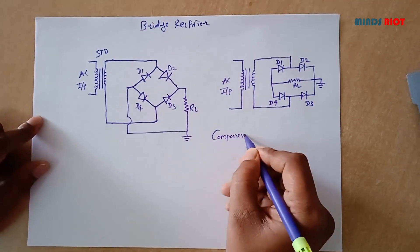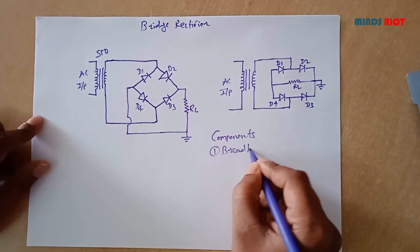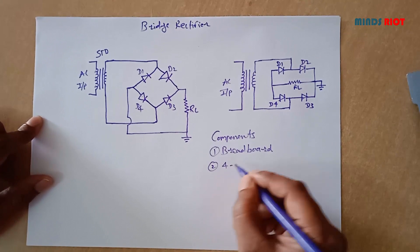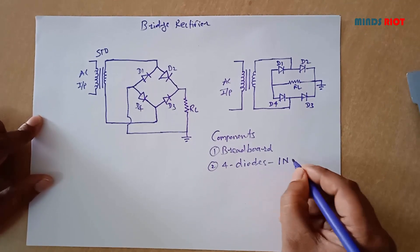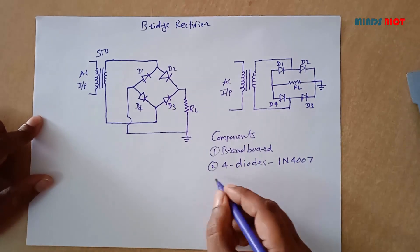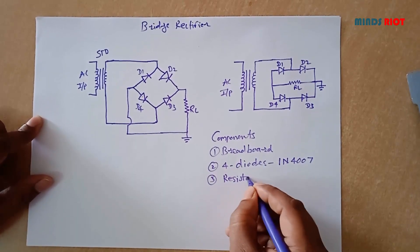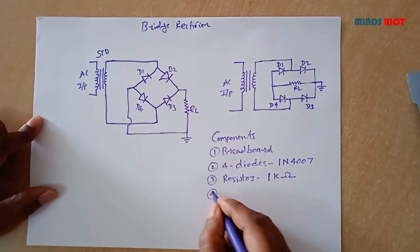Now the components required for implementing bridge rectifier on breadboard: first is breadboard, second is 4 diodes 1N4007.